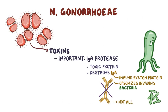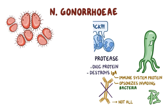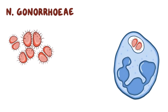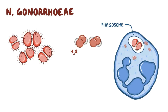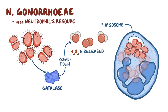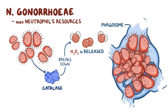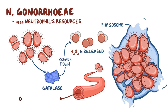However, not all IgA molecules get neutralized, so some N. gonorrhoeae bacteria are still opsonized and end up getting attacked by neutrophils. Inside the neutrophil, N. gonorrhoeae is wrapped in a phagosome, a bubble inside which reactive oxygen species, like hydrogen peroxide, are released to kill it. However, N. gonorrhoeae releases catalase, which breaks down hydrogen peroxide. This translates as a win for N. gonorrhoeae, which now takes over the neutrophil and uses its energetic resources to multiply. The neutrophil eventually becomes too full and bursts open, letting out a ton of bacteria in the bloodstream, which is known as gonococcemia.